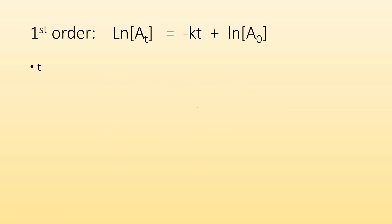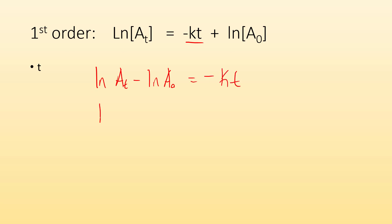What if I want to solve for t? It's going to be basically the same process. I've got to get kt by itself, so ln of the amount at the time minus ln of the starting amount equals negative kt. I can combine these — subtracting means dividing the insides — so ln of (at over a zero) equals negative kt. Then divide by negative k, and that gives me t.